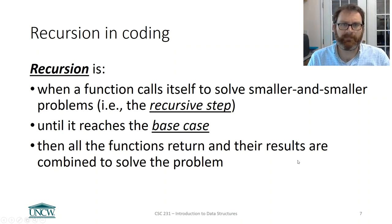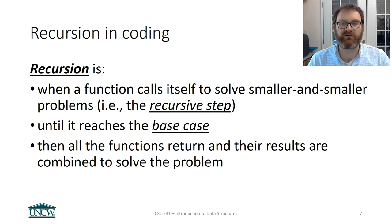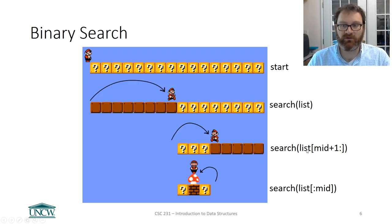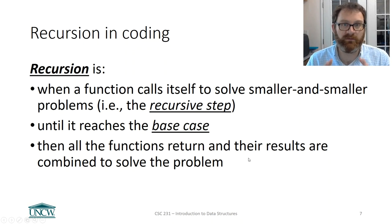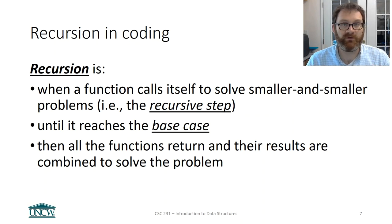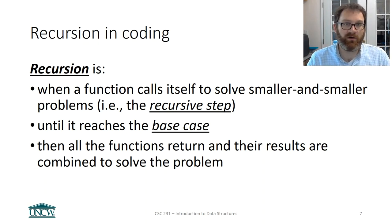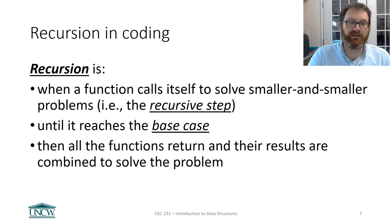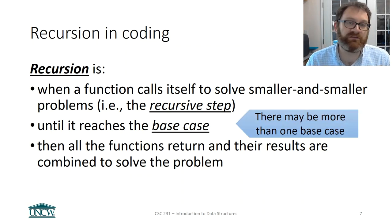Recursion in code: recursion is when a function calls itself to solve smaller and smaller problems. We call this the recursive step — calling itself on smaller and smaller pieces of the list until it reaches the base case. The base case is something that the function knows the answer to. If I hit the mushroom, I found it, return true. Then all the functions we've called inside ourselves return and their results are combined to solve the problem. There may be more than one base case, but we'll get there in a few minutes.